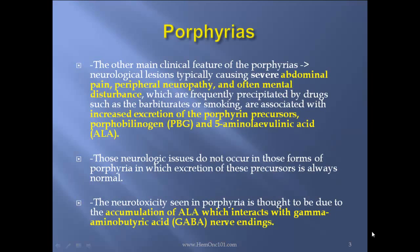The other main clinical feature of the porphyrias is neurological lesions, typically causing severe abdominal pain, peripheral neuropathy, and often mental disturbances, which are frequently precipitated by drugs such as barbiturates or smoking. These are associated with increased excretion of the porphyrin precursors porphobilinogen (PBG) and 5-aminolevulinic acid (ALA).